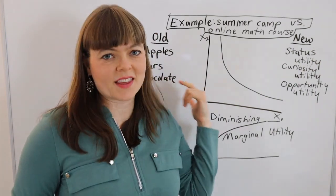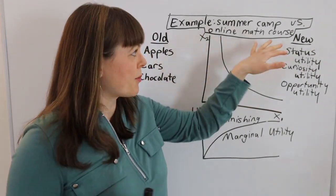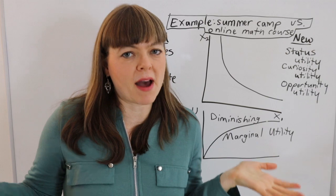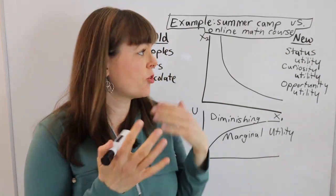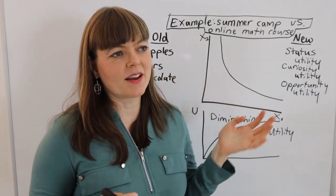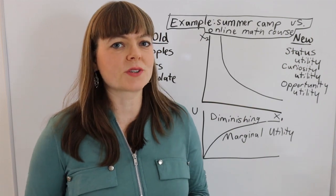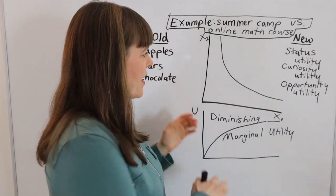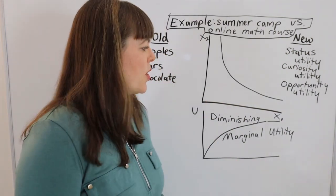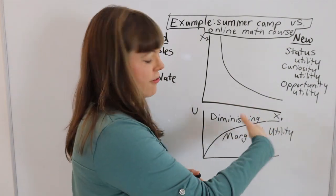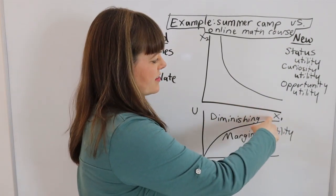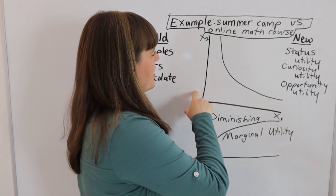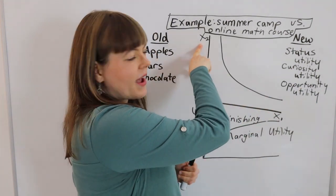And the example I'd like to use to think this through is summer camp versus online math courses. And you can actually measure both of these in days or weeks that you're enrolled in the course. So a classic way of setting this up would be to put summer camp for your kid or for your teenager on the x axis, that's good x1, and online math courses on the y axis, that's good x2.